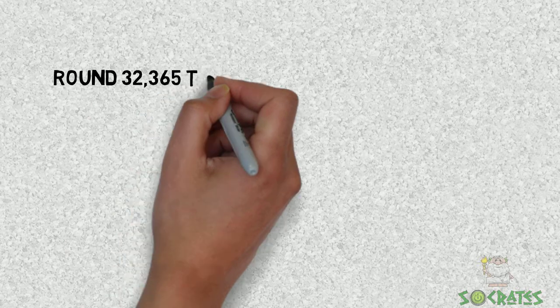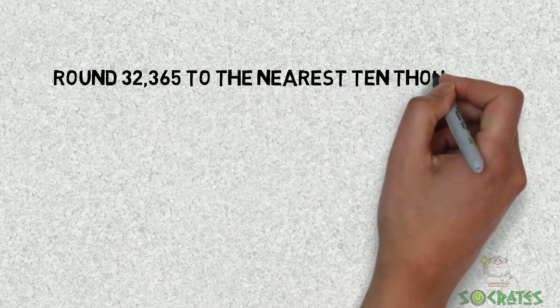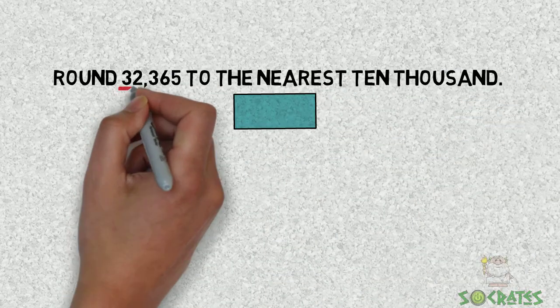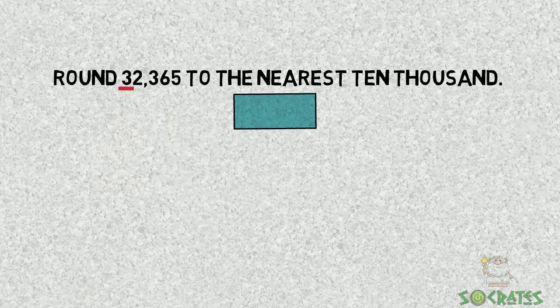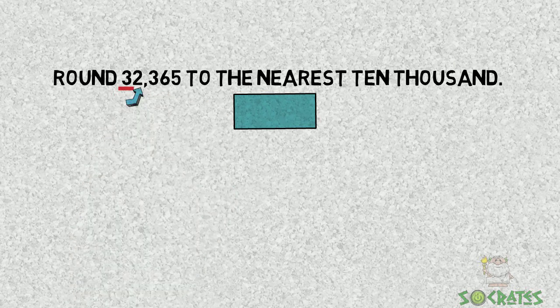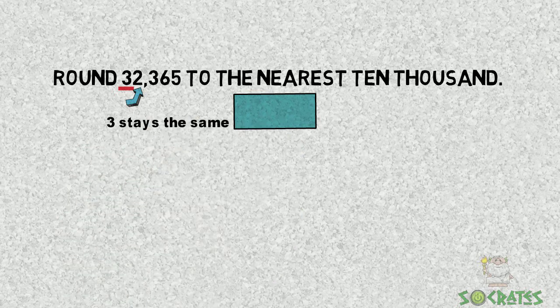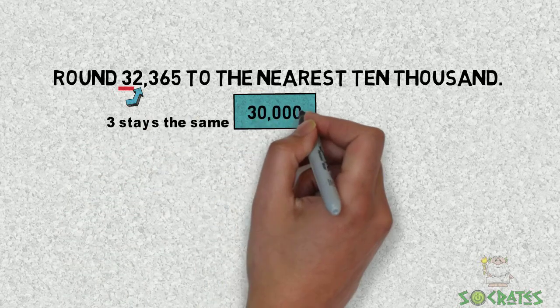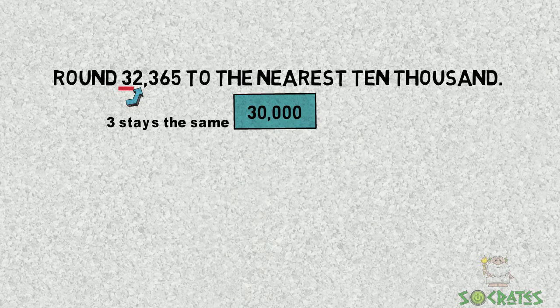Let's try some more. Round 32,365 to the nearest 10,000. So the 3 is in the 10,000 place. We look next door at the 2 which is less than 5. So 3 stays the same and then the rest are zeros. So 30,000 is our answer.